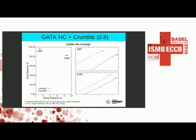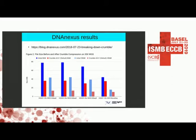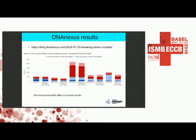DNA Nexus independently evaluated Crumble and found similar file size reductions. They tested more datasets, including NovaSeq, where the reduction is smaller because quality values make up a smaller proportion of the file. They confirmed that Crumble did not harm analysis quality and in fact improved results not only on GATK, but also on FreeBayes and Google DeepVariant.